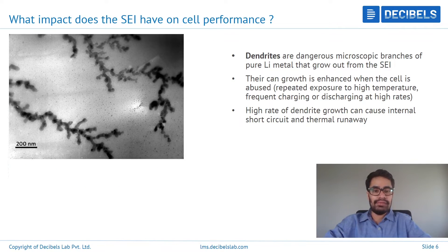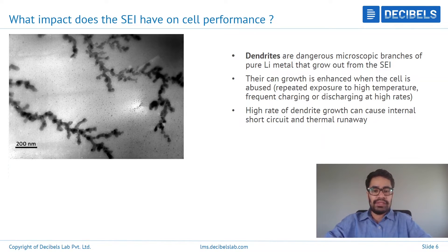Dendrites are growths of pure lithium metal ions that are deposited on the anode surface and can start to grow over time if the SEI layer does not have any restrictions in terms of growth. Because of this, dendrites can start to cause major problems or hazardous situations inside the cell and can cause something called a short circuit and thermal runaway. You can see on the left-hand side a microscopic view of how exactly a dendrite looks after the SEI layer has grown to a certain thickness.